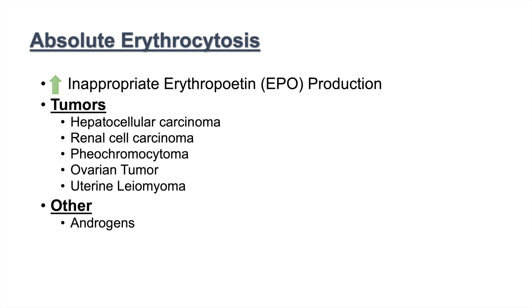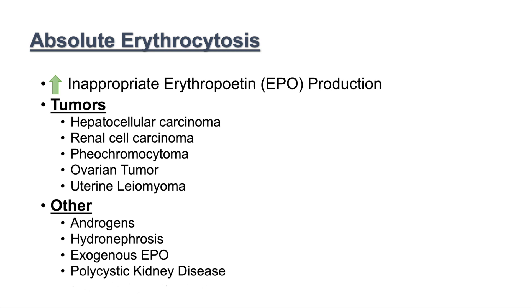Additional causes of inappropriate EPO production include androgens, hydronephrosis, exogenous EPO administration, polycystic kidney disease, and post-kidney transplant. Many of these are kidney-related because EPO is produced in the kidneys — if there is an enlarged renal mass, it can produce more EPO, as long as the kidney is not too damaged.